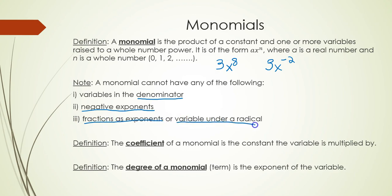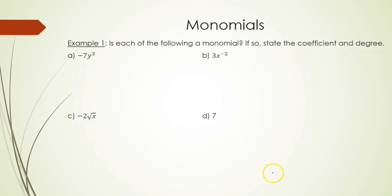It also cannot have a variable under a radical. The coefficient of a monomial is the number in front of the variable. The degree of the monomial, or term, is the exponent or power on the variable. Let's identify whether each of the following is a monomial, and if so, state its degree and coefficient.